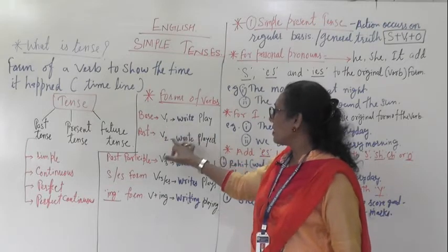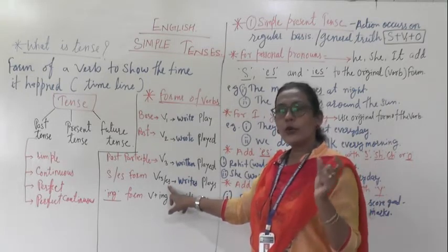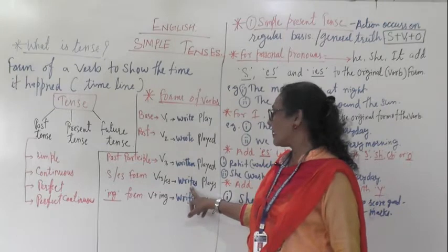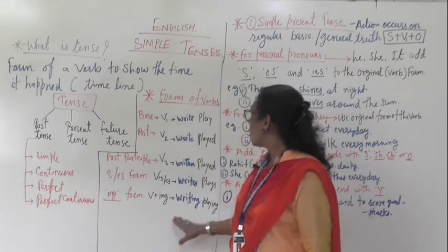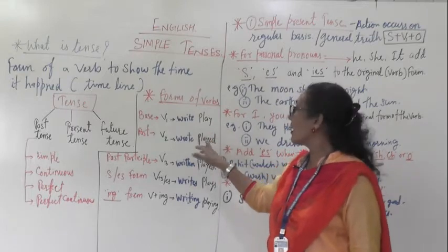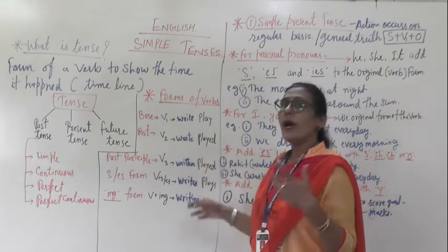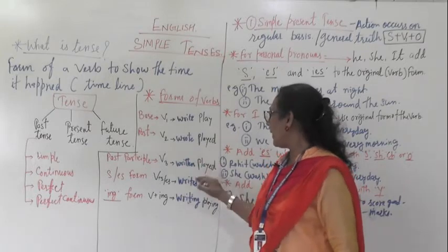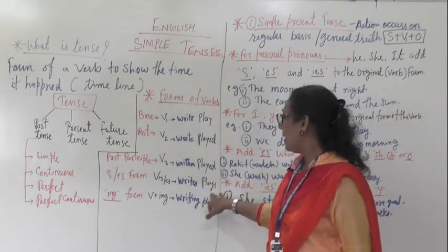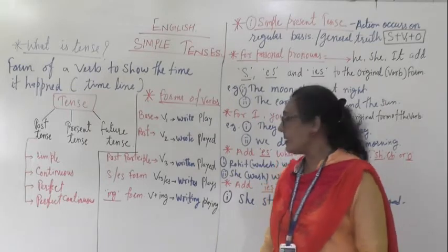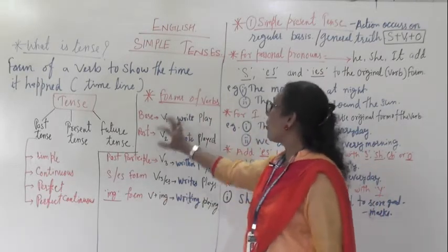V1 is write, V2 is wrote, V3 is written. S or ES — we add S to write, making writes. The -ing form: write plus -ing gives writing. Second example: play — V1 is play, V2 is played (past tense), V3 is also played. Adding S gives plays, and adding -ing gives playing. These are the base forms of verbs.